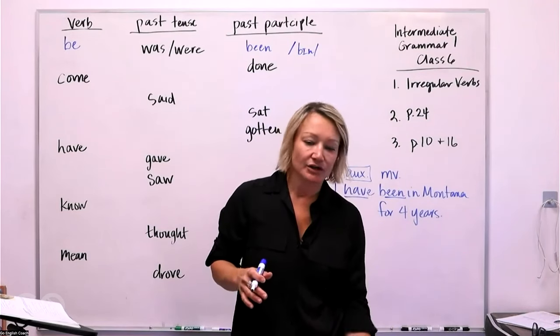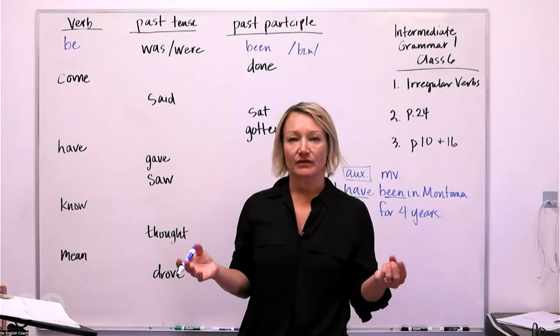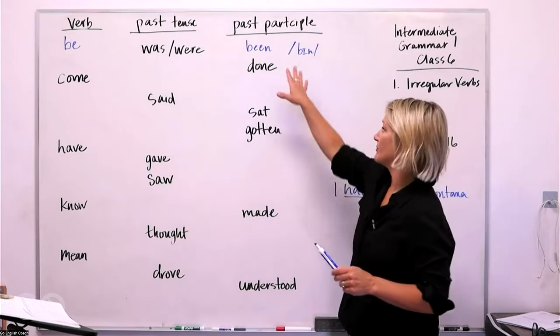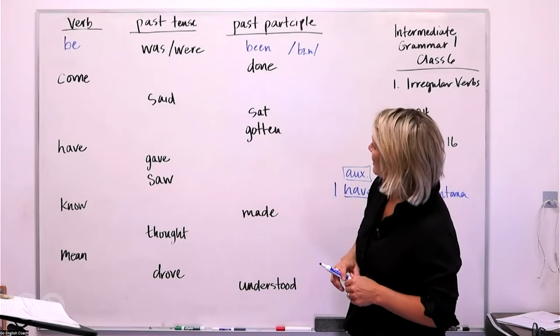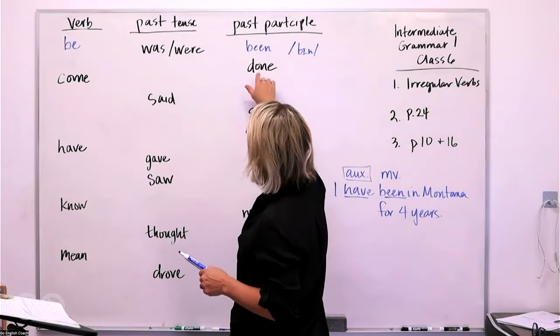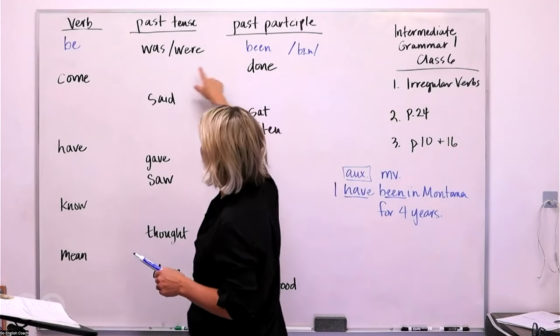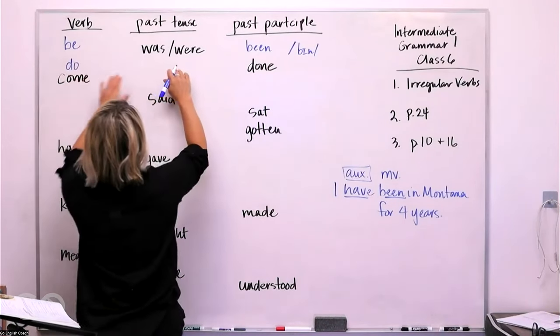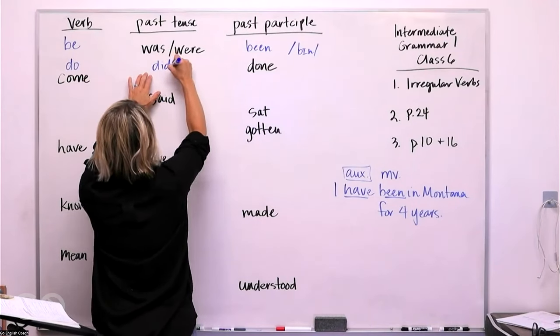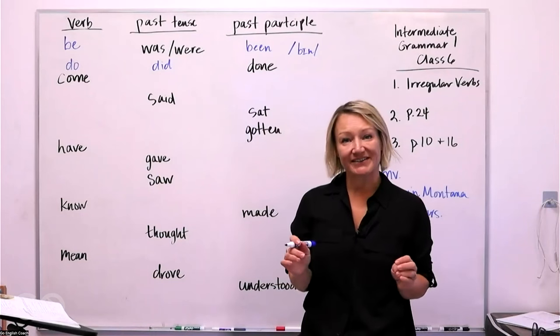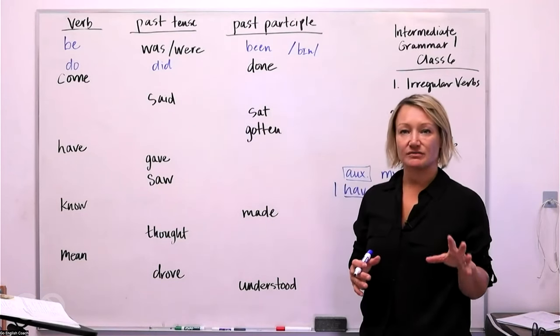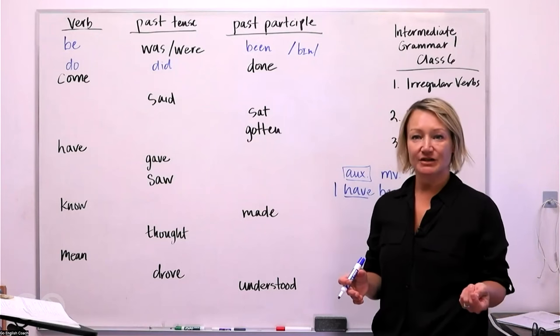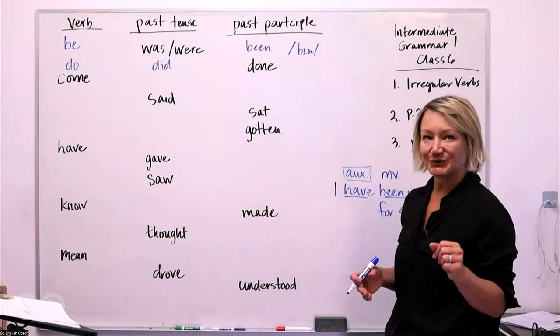And then the past participle of the verb to be, the past participle we use in a couple of places specifically, and most commonly we use it in the perfect tense. So think about this. If I'm going to use this verb, I have been in Montana for four years. I have been, so this is your main verb and then this is the auxiliary or helping verb. So we're going to put been here and it's not bean. In the United States and Canada, we say bin, almost like that, but it does vary.